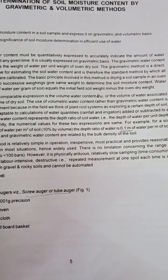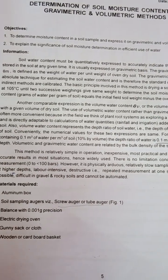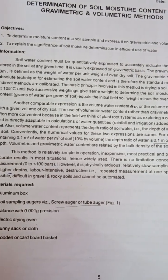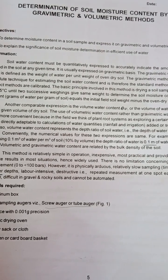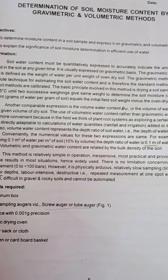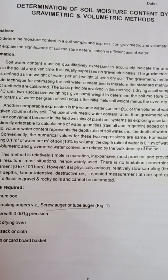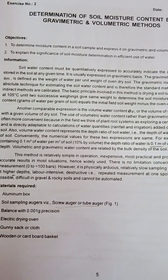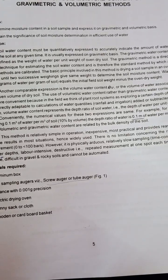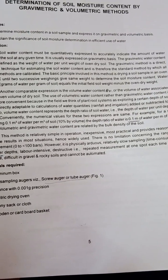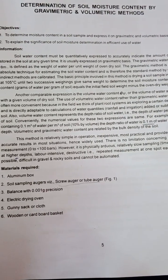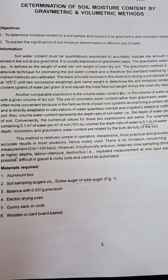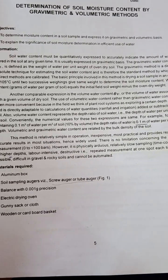The gravimetric method is a direct and absolute technique for estimating soil water content, and is therefore the standard method by which all indirect methods are calibrated. The gravimetric and volumetric methods are direct soil moisture estimation methods. The basic principle involved is drying a soil sample in an oven at 105 degrees centigrade until two successive weighings yield the same weight, to determine the soil moisture content.